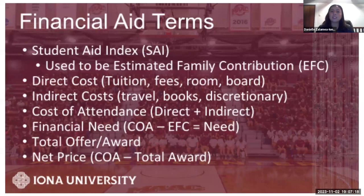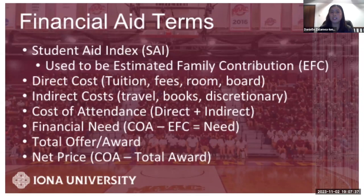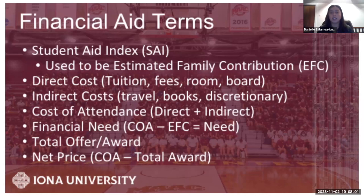A key financial aid term to keep in mind is Student Aid Index, or SAI. Previously, they used Estimated Family Contribution, or EFC. Now they're making changes and using SAI, which works very similarly to EFC — just keep that switch in mind. When looking at financial aid packages, you're going to see direct costs a lot. Direct costs refers to tuition, fees, and room and board — which could also be called food and housing. Essentially, room and board and food and housing refer to the same thing.